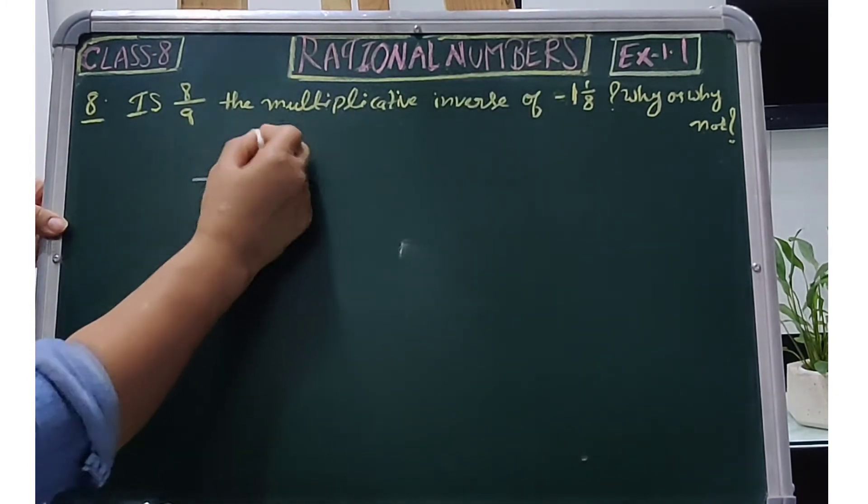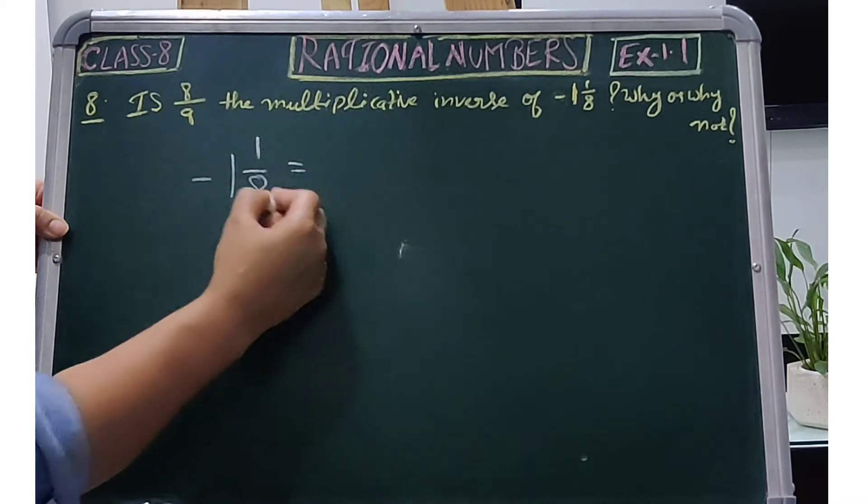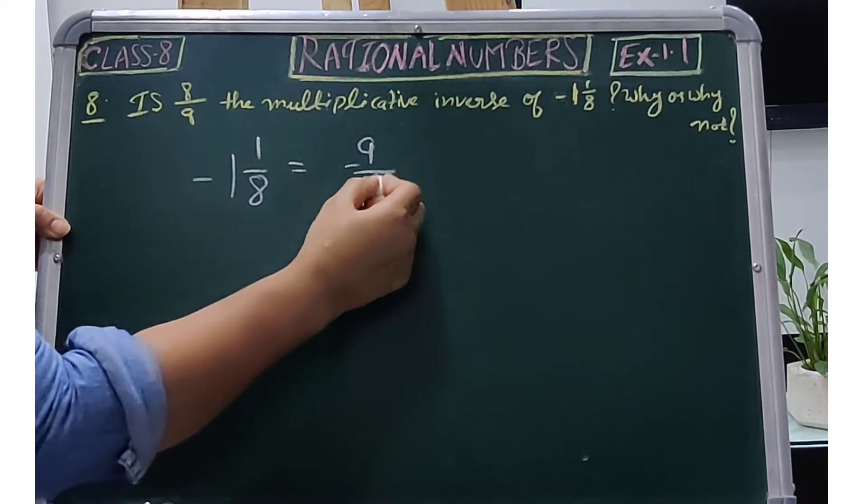First of all, we have written this number as a mixed fraction, so we will convert it to improper. -1 1/8 equals -9/8.